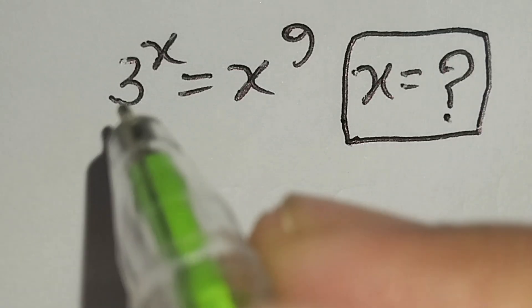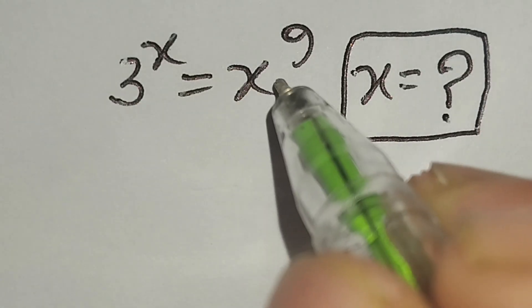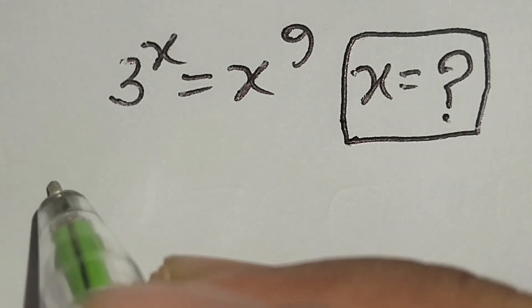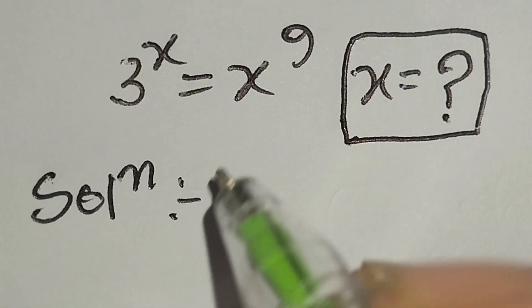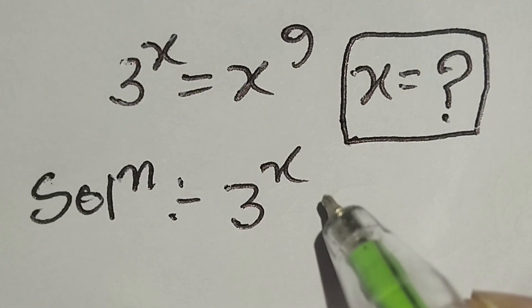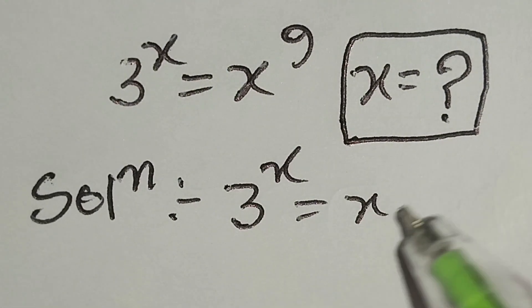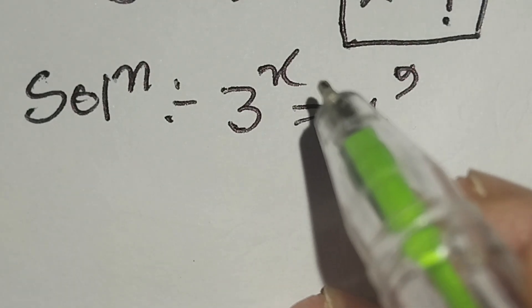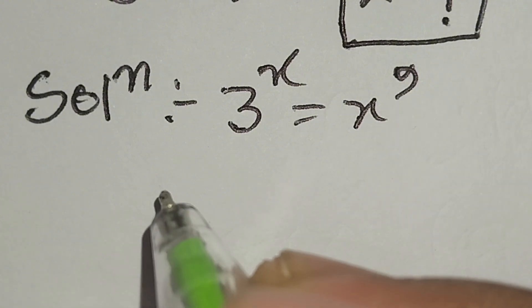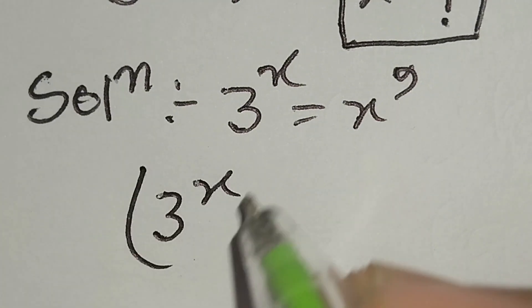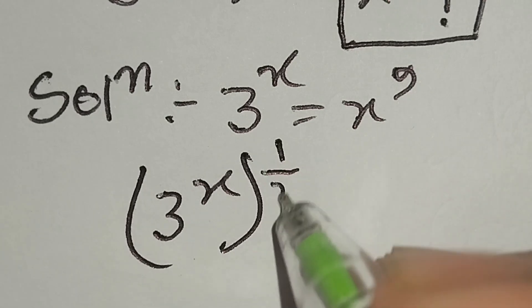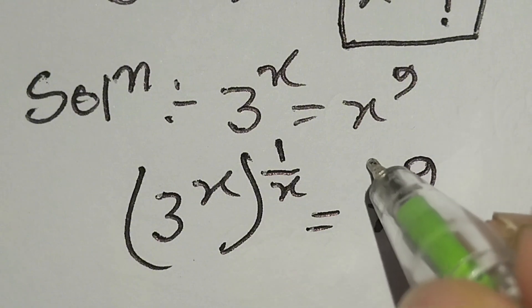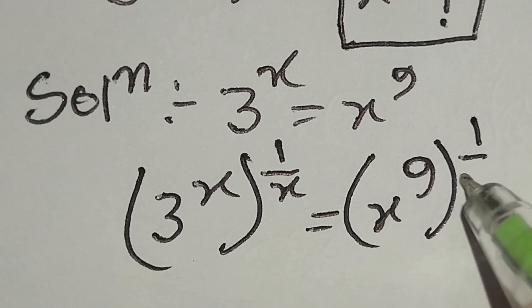Hello, this is a nice math problem. 3 to the power x is equal to x to the power 9, and we have to find the value of x. Let's start the solution. The given equation is 3 to the power x is equal to x to the power 9. Now we will multiply both sides' power by 1 over x, so we can write 3 to the power x, whole power 1 over x, is equal to x to the power 9, whole power 1 over x.